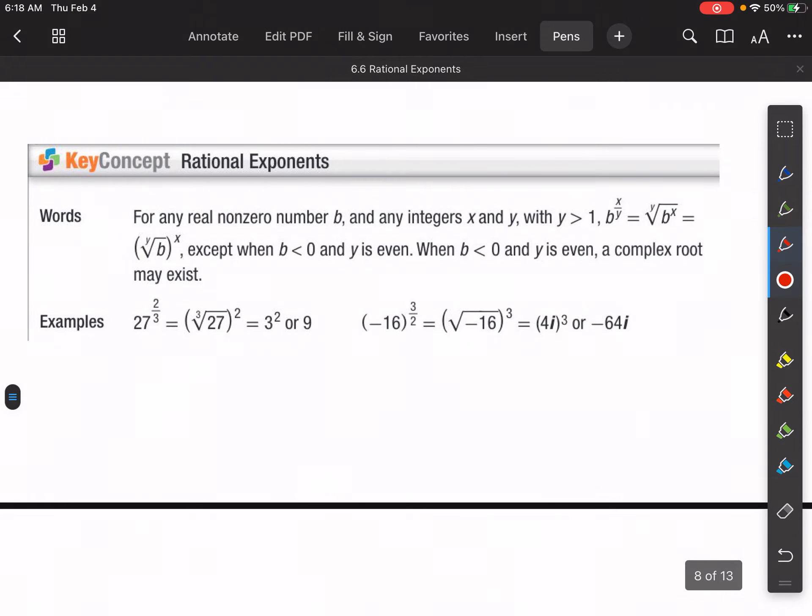Rational exponents. So for any real non-zero number b and any integers x and y, where we have y is greater than 1, b to the x over y is the same thing as b to the x, the y-th root of b to the x.